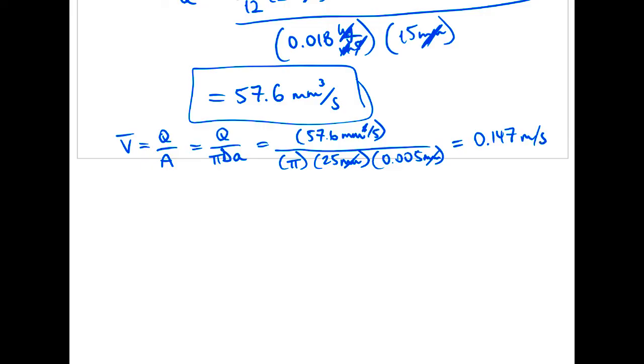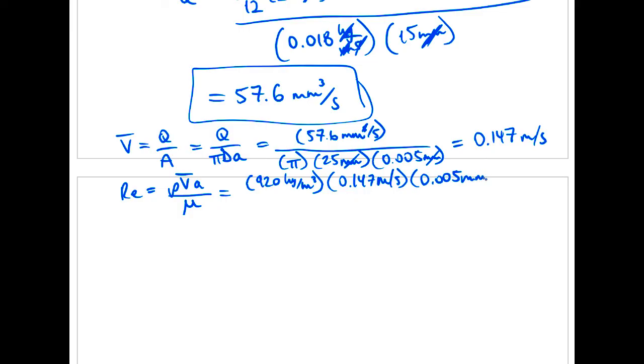0.147 meters per second is pretty slow. But let's just see what the Reynolds number is. Rho V A over our mu equals... we can look this up: 920 kilograms per meter cubed roughly for that oil. We just figured out 0.147 meters per second is our average velocity. Gap length 0.005 millimeters. And then we'll do this: one meter is a thousand millimeters. I probably should have done the same conversion here just to make it really clear to make sure we have our units matching there. And then I need viscosity on the bottom, which we got from the table: 0.018 kilograms per meter second.